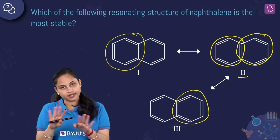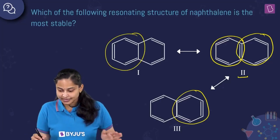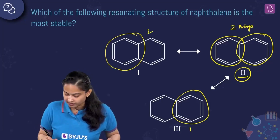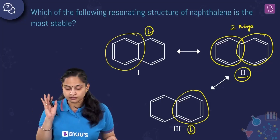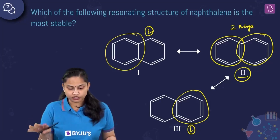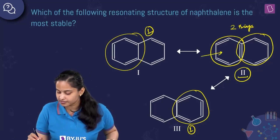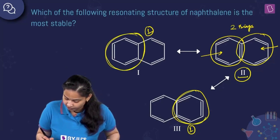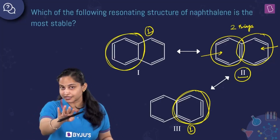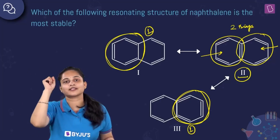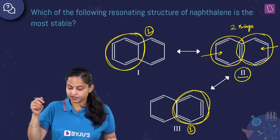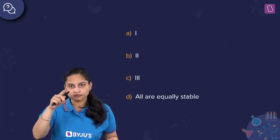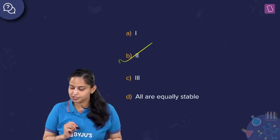In the second resonating structure of naphthalene, both rings are in benzenoid form. In the first and third resonating structures, only one ring is in benzenoid form. Therefore the first and third are equally stable but less stable than the second. The second resonating structure, having two rings in benzenoid form, is the most stable. Option number B is the right answer.